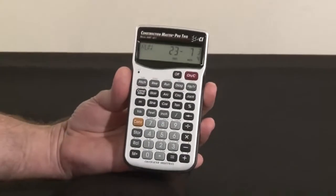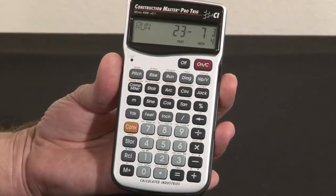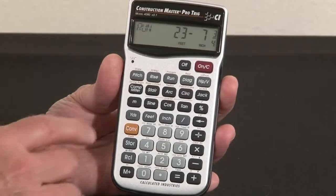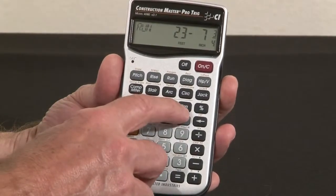It shares many of the same features as a standard Construction Master Pro, but gives up the length, width, and height, the blocks, and the drywall functions to make room for the addition of the full Trig functions.